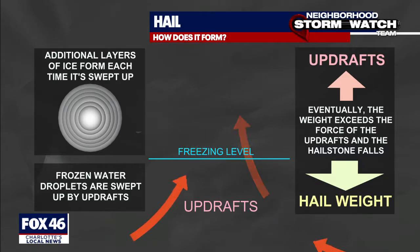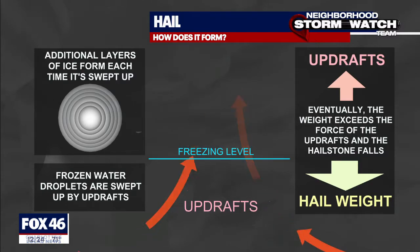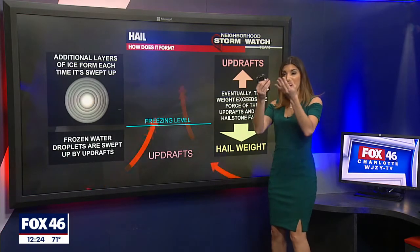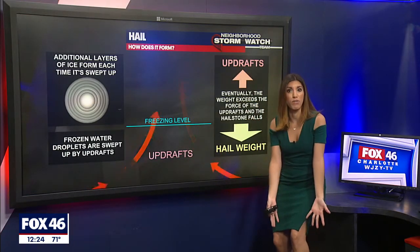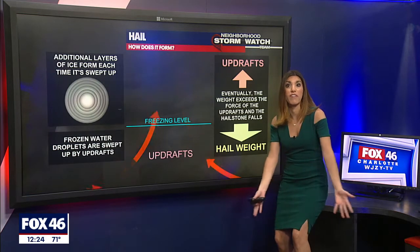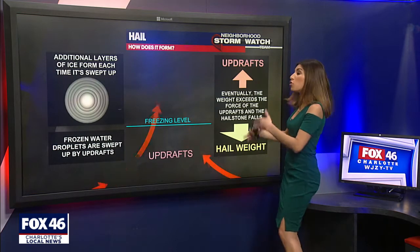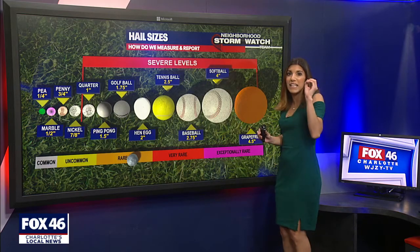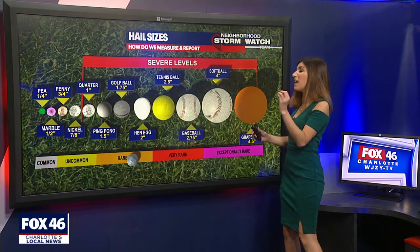What's going to happen is the weight of that ice ball is going to start to overpower the updraft — the winds trying to keep it up. Eventually this ice ball gets too heavy, and we know how gravity works: it's going to fall down to the ground. That's how you get these huge clusters of ice just falling out of the sky.